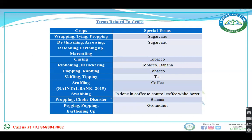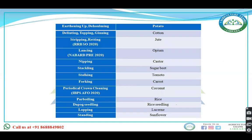Now I'll show you various crops and the terms associated with them. Wrapping, tying, and propping are associated with sugarcane. Dethrashing, arrowing, ratooning, and earthing up are also associated with sugarcane. Curing is associated with tobacco as well as tea. Topping is in tobacco and banana. Fluffing and grabbing are tobacco terms. Skipping and tipping are tea terms. Scuffling is in coffee. Swapping is done in coffee to control the white border. Propping and choke disorders are in banana. Pegging, popping, and earthing up are done in groundnut.